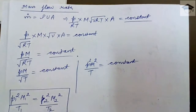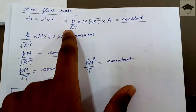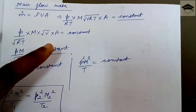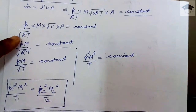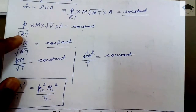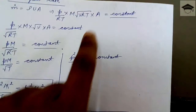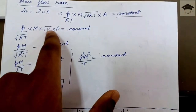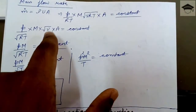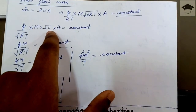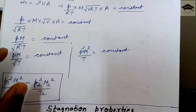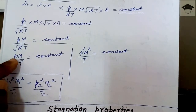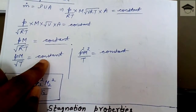Simplifying p/(RT) · M·√(γRT): the √(RT) terms partially cancel, giving p·M·√γ / √T = constant. Since R, γ, and A are all constants for a given fluid and device, they merge into the constant. What remains is p·M / √T = constant, or equivalently p²·M² / T = constant. Therefore: p1²·M1² / T1 = p2²·M2² / T2.